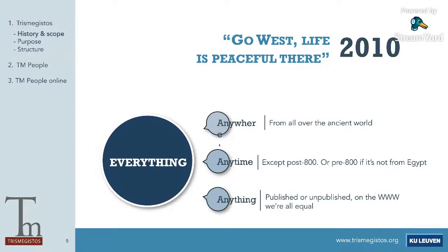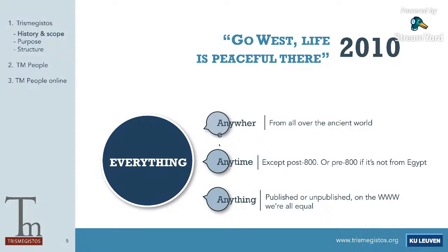We include documents from all over the ancient world, and we also integrate unpublished texts, because more and more material is being put online by museums even though these texts aren't published. The map gives you an idea of the scope — we have texts all the way from Scandinavia to Sudan, from Portugal to the Indus Valley. Basically, everything that's relevant is included in the data.